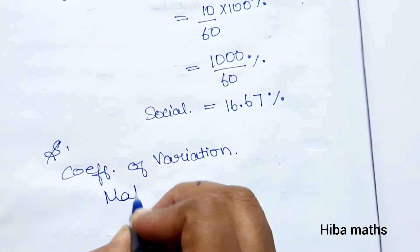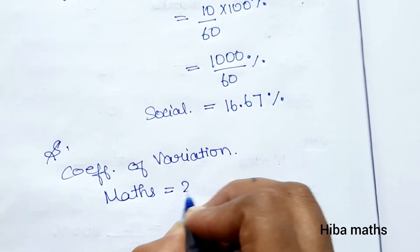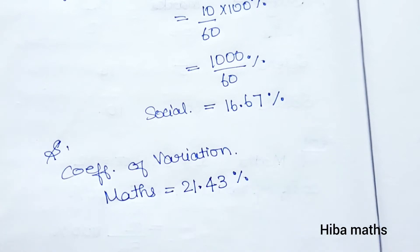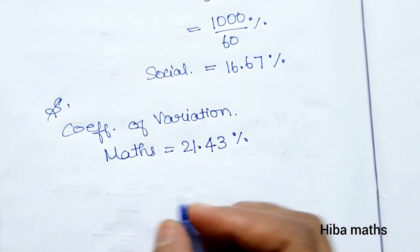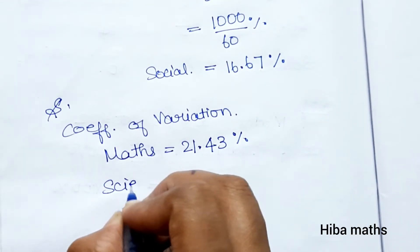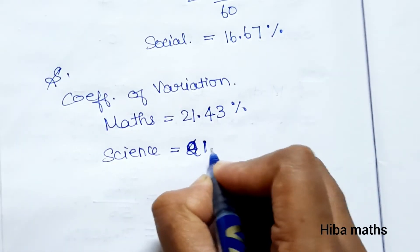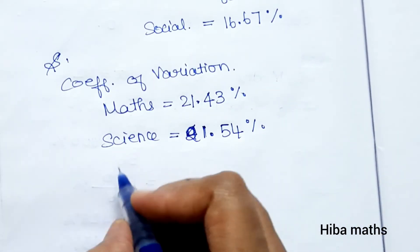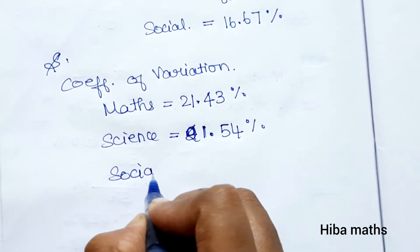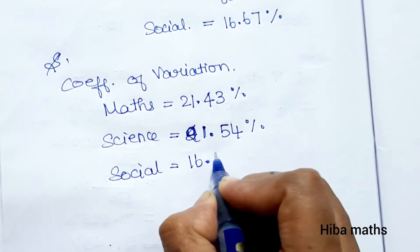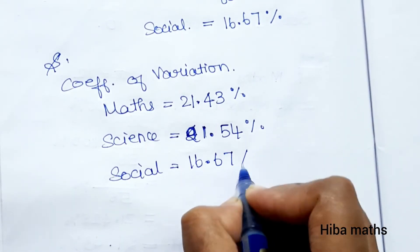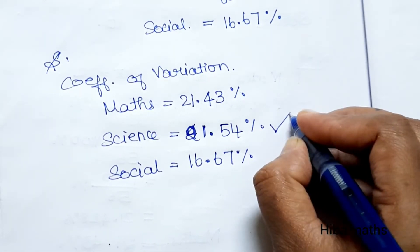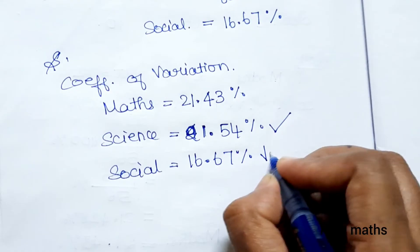Comparing the three results: Mathematics CV is 21.43 percent, Science CV is 21.54 percent, and Social Science CV is 16.67 percent. Since Science has the highest coefficient of variation and Social Science has the lowest, Science shows the least consistency and Social Science shows the most consistency.